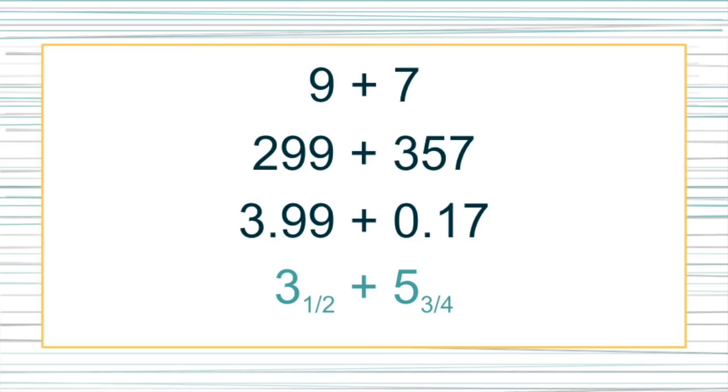3.5 is the same thing as 3 and 2/4. So we have a lot of work with developing number sense and everything else that goes into helping kids really understand this concept. But the idea of make it friendly is I need a fourth, so that I could turn the 5 and 3/4 into 6. And if I understand that 3.5 is 3 and 2/4, I can take one fourth away. And now I've made my number friendly, I have 6, and I'm left with 3 and 1/4. That is way nicer to add together.